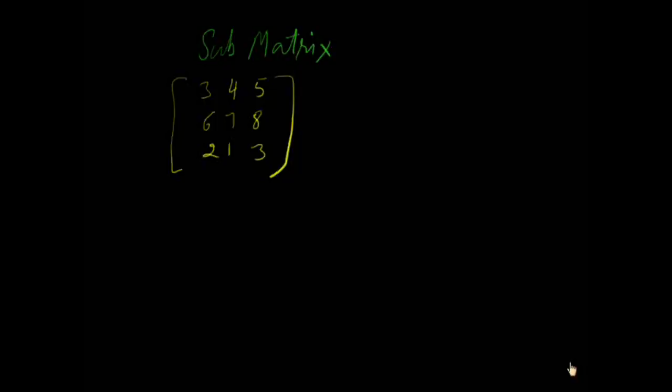Now we explain sub matrix. Sub matrix is the part of main matrix. If we take some rows and columns of main matrix, suppose this is a matrix with three columns and three rows, we can take its sub-matrix by taking two rows and two columns. This is a sub matrix, sub matrix is equal to three, four,